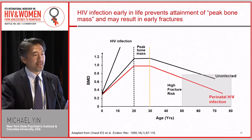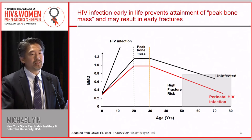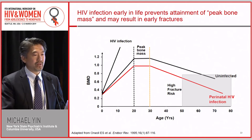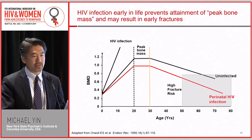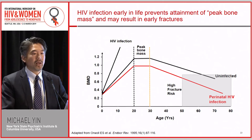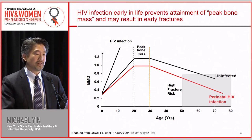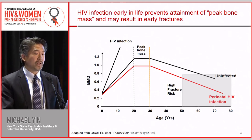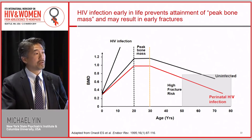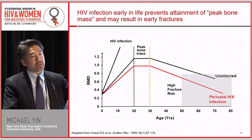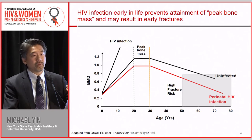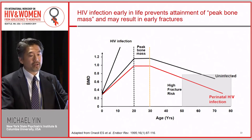What I do worry about is younger folks. About 15 million people living with HIV are under the age of 25. HIV infection and antiretrovirals at an early age may have an additional impact. If you get infected with HIV and start ART early in life, you may never reach your genetically determined peak bone mass, which should occur between age 20 and 30. If you don't reach that point, you'll be at higher risk for bone loss, fracture, and may have earlier and more fractures in adulthood.